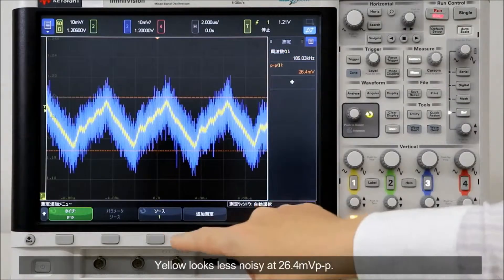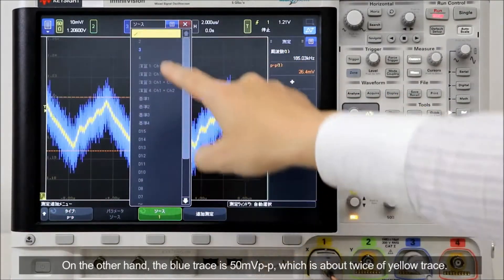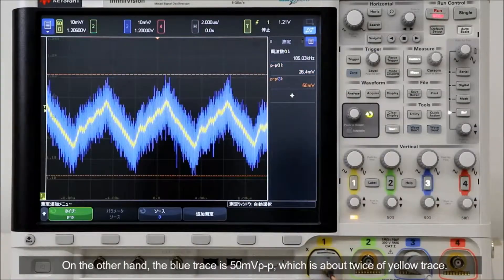Yellow trace looks less noisy at 26.4mV peak-to-peak. On the other hand, the blue trace is 50mV peak-to-peak, which is about twice the yellow trace.